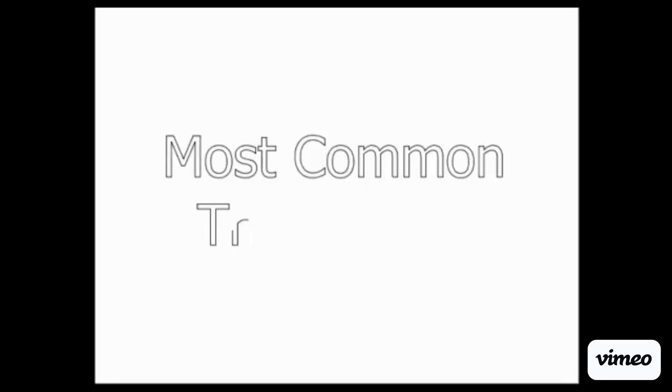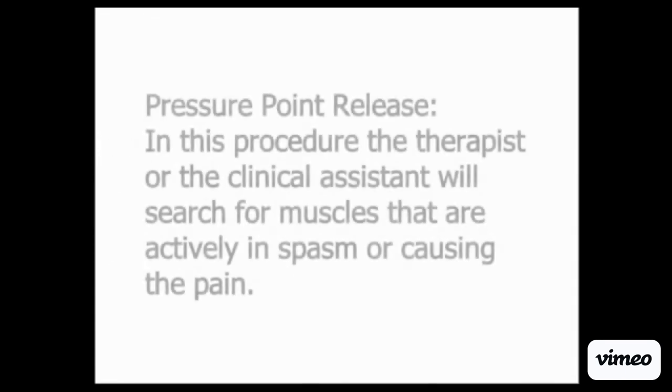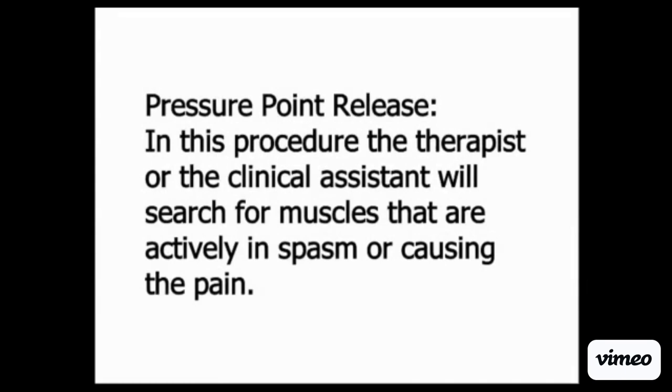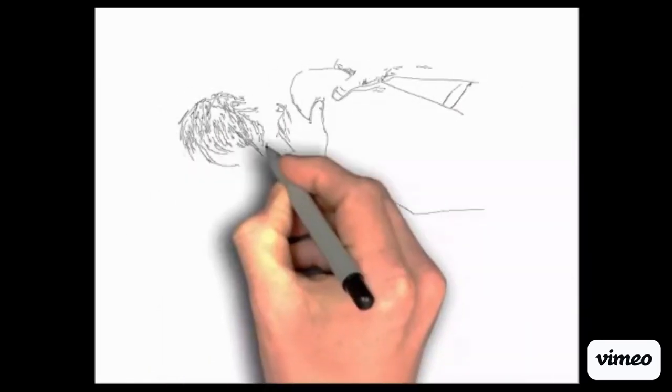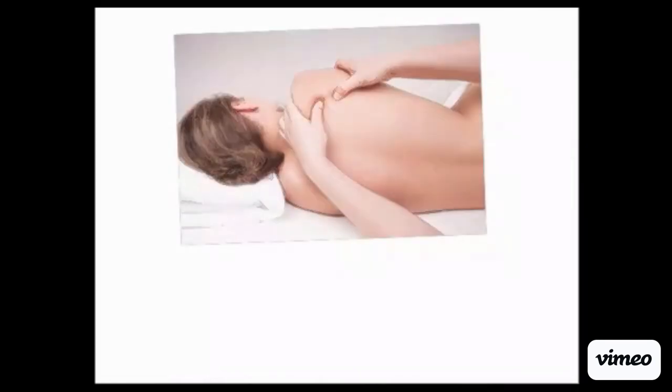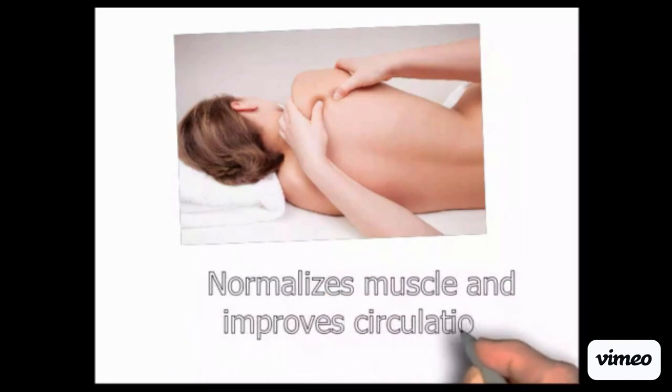A quick description of some of the most common treatments performed by your physical therapist. Some of the procedures include pressure point release, which in this procedure, the therapist or the clinical assistant will search for muscles that are actively in spasm or causing the pain. They will then push on the muscle for about one to two minutes. Initially, it will cause some soreness, but it should diminish steadily. With this, it helps to normalize the muscle and improve circulation in that area.